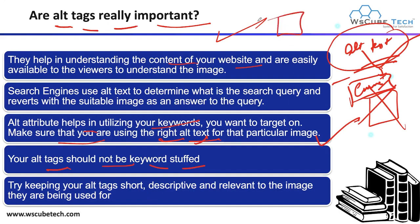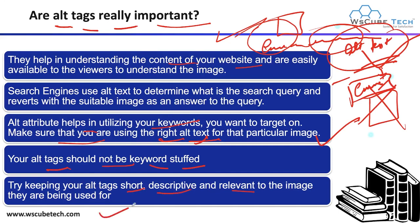Your alt text must include your keyword, and that particular keyword must belong to your particular image. Your alt text should not be keyword stuffed — meaning you are not using your particular keyword multiple times. For any particular image, you don't do keyword stuffing just to rank your image. Try keeping your alt tag short, descriptive, and relevant to the image.